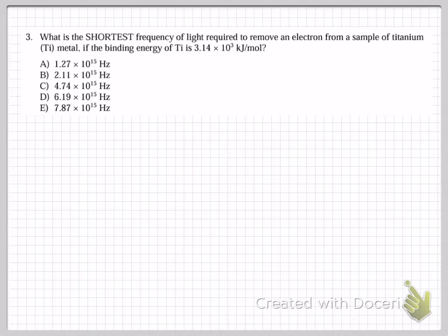This is the third problem. They're asking you combined concepts. What is the shortest frequency of light, of the photon, to remove an electron from a metal sample if the binding energy of this metal is 3.14 × 10^3 kJ/mol?